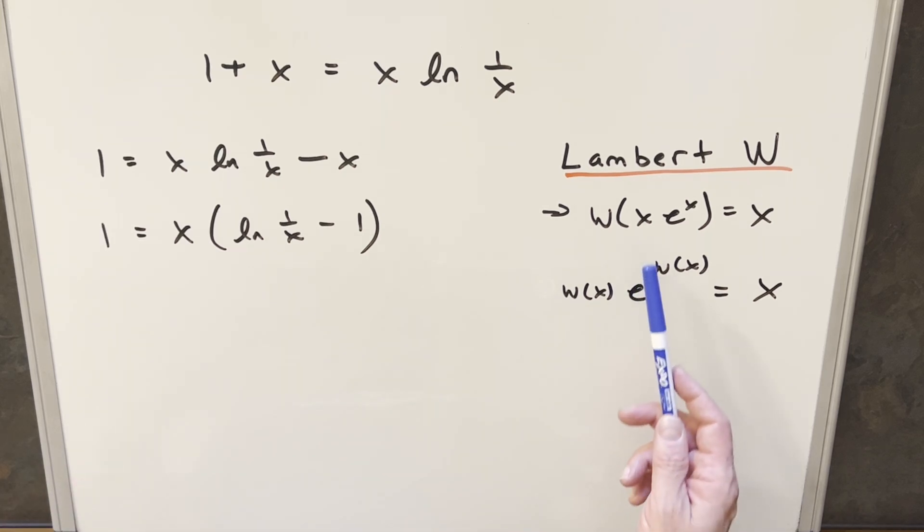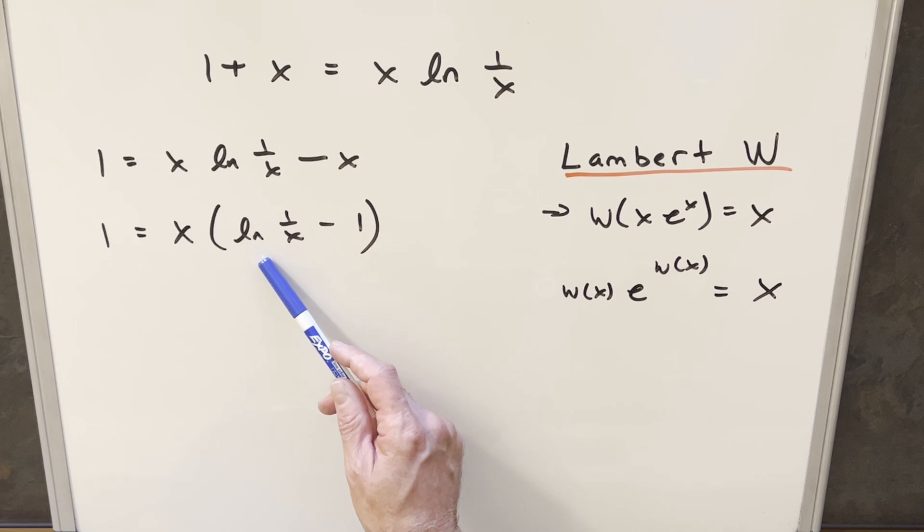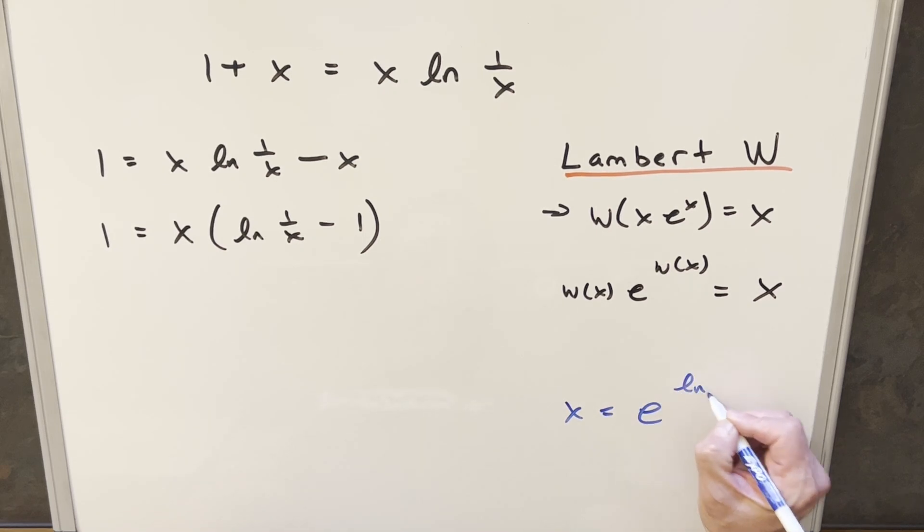Now, as far as using the Lambert W function, you'll notice for both these formulas, we have an e in it. And we don't really have an e here, although technically we have natural log. But what I want to do in order to just create this e here, for x, we can use this trick that we can write x as e ln x.